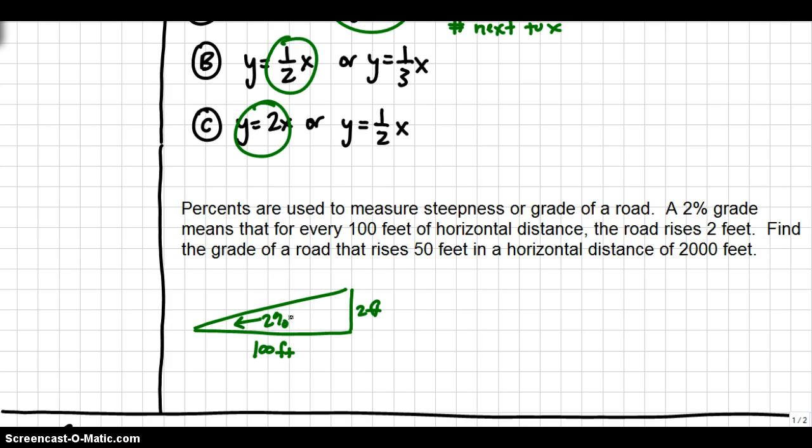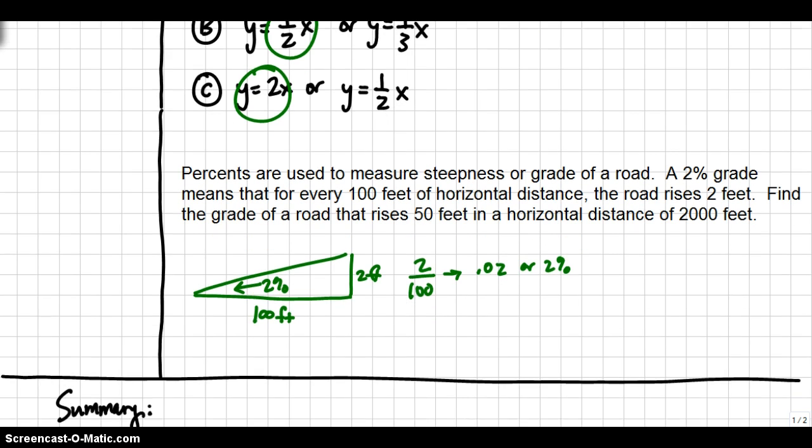This would be indicated by 2%. The 2% came from us doing the rise over the run because that's how you calculate slope. So if you do the rise, which was 2, over the run, which was 100, you divide that, you will get 0.02, which is the same as 2%.